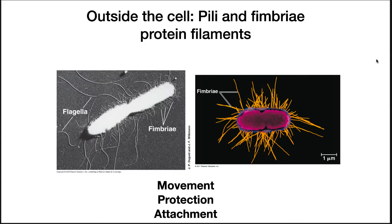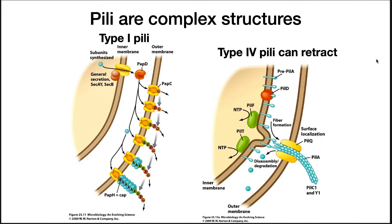The final structures to examine project beyond the cell surface. One type forms tubes that stick out into the environment, like a sea urchin or a burr from a plant. These are called fimbriae and pili. They deter predators, such as amoeba, from engulfing the cell, and also help bacteria stick to surfaces. Pili proteins are synthesized inside the cell and secreted to the outer membrane in gram-negative bacteria. A protein complex assembles the pili as it grows from the cell surface. Type 4 pili can assemble, elongating outside the cell, and disassemble, retracting back into the cell.